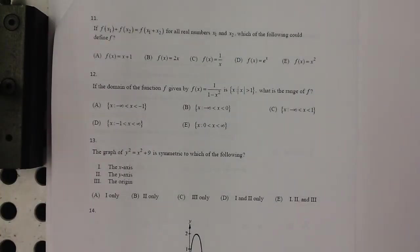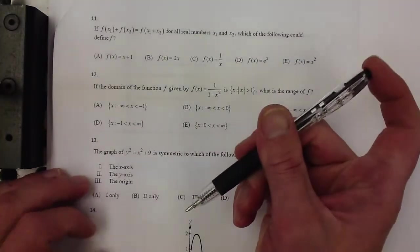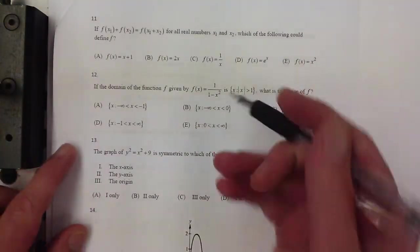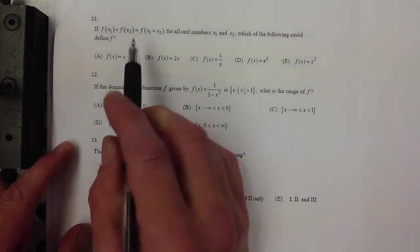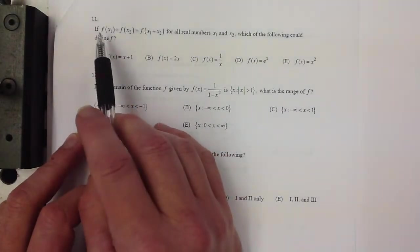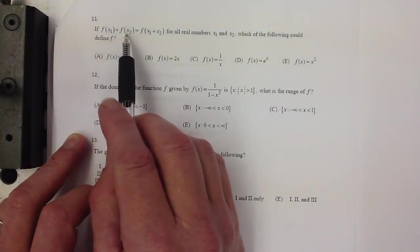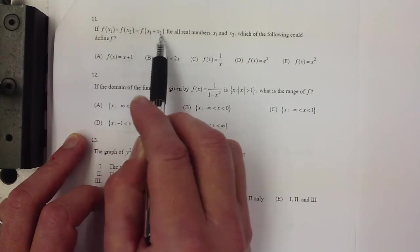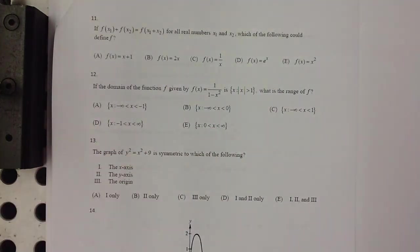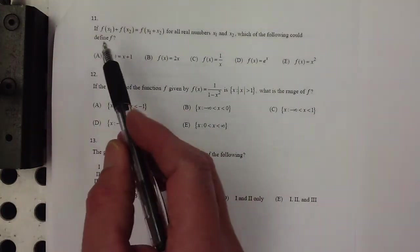All right. Let's shoot for 11 through 15 here. Number 11 is an interesting question. If f(x1+1) + f(x2+2) = f(x1+x2), then which of the following could be f?